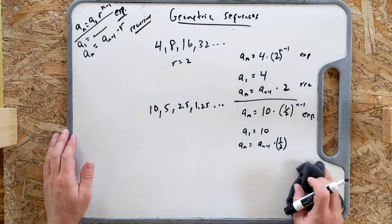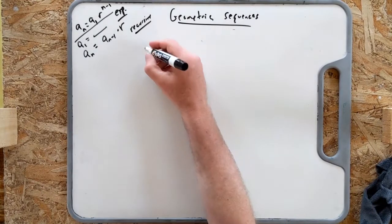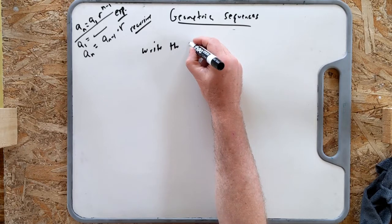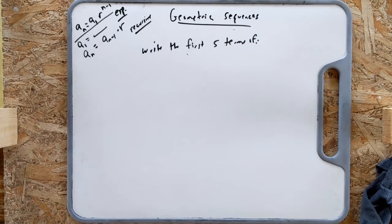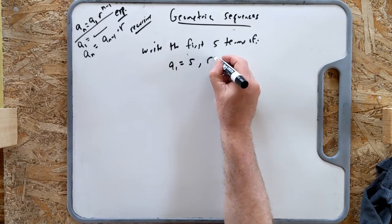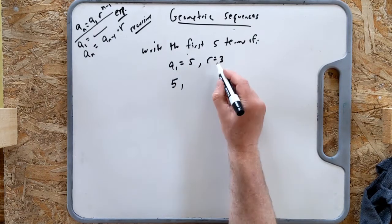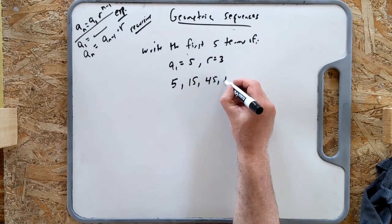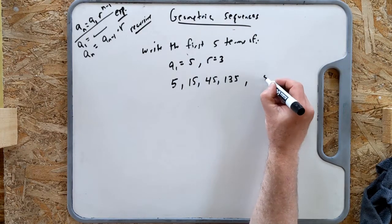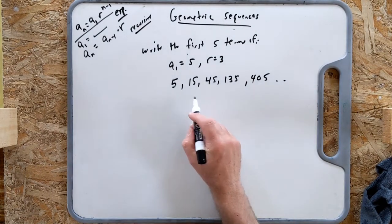A couple more examples. First, write the first five terms of the sequence where a_1 equals 5 and r equals 3. Pause the video and try it. The first term is 5. Multiply by 3: 15, then 45, then 135, then 135 times 3 is 405. So the first five terms are 5, 15, 45, 135, 405.